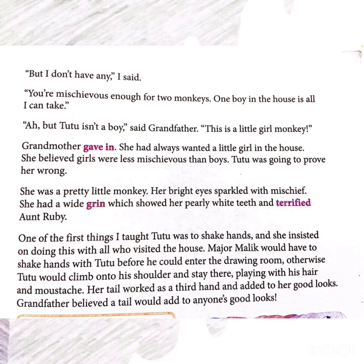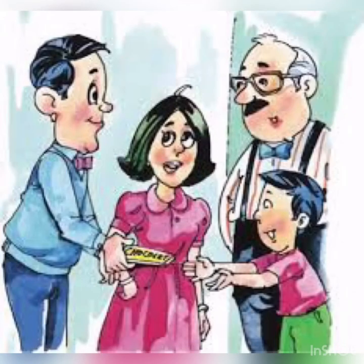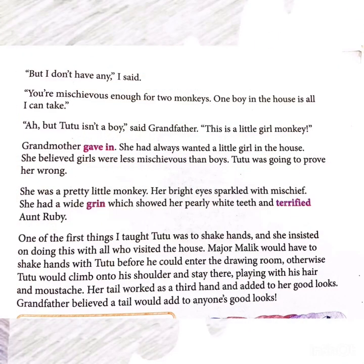Tutu was a very pretty little monkey. Her bright eyes always sparkled with naughtiness. She had a wide grin — grin means a big smile — which showed her pearly white teeth and terrified Aunt Ruby. One of the first things Grandfather and Grandmother taught Tutu was to shake hands, and she insisted on doing this whenever any guests came to the house. One day, Major Malik entered and was made to shake hands.